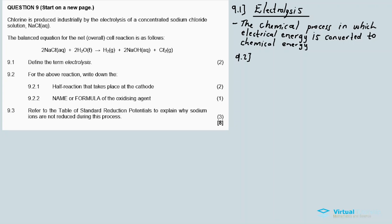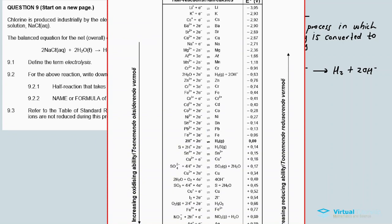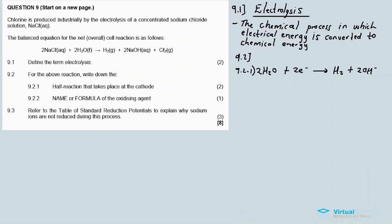So therefore, the answer to 9.2 will be water. So right, 9.2.1, it's going to be water will be reduced. So maybe in some way I suppose we need to take this equation. It's this one here. It's this one. We tell from the reduction potential table.